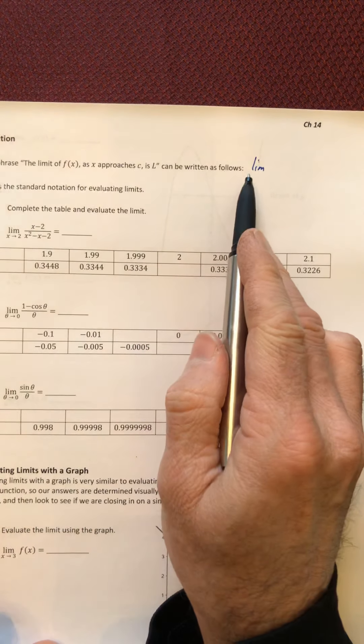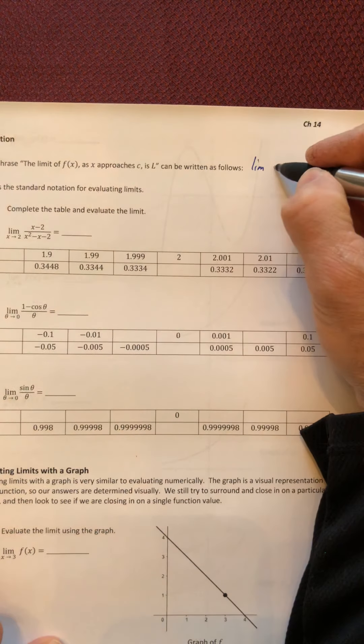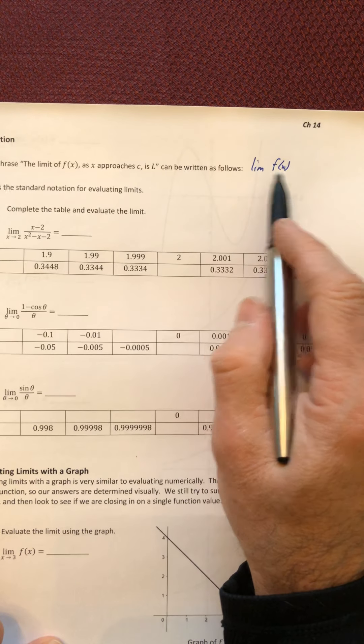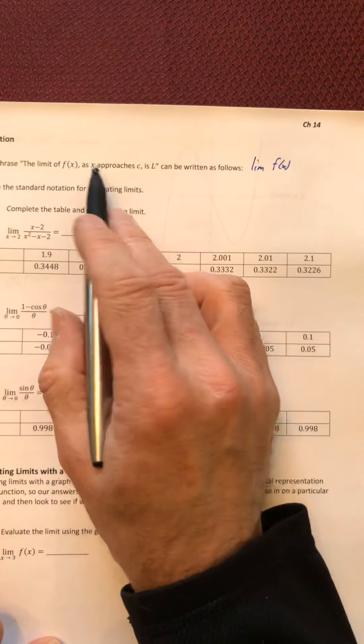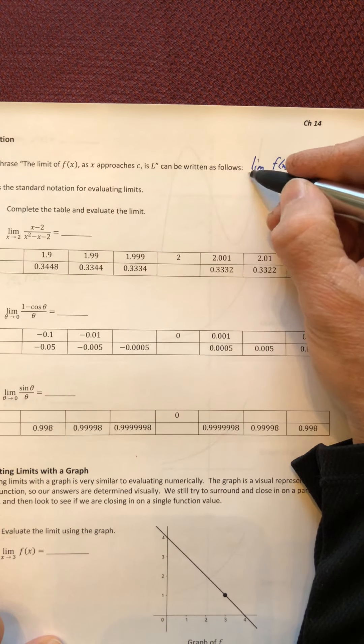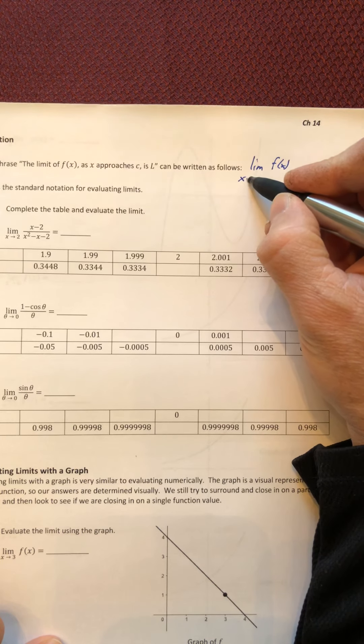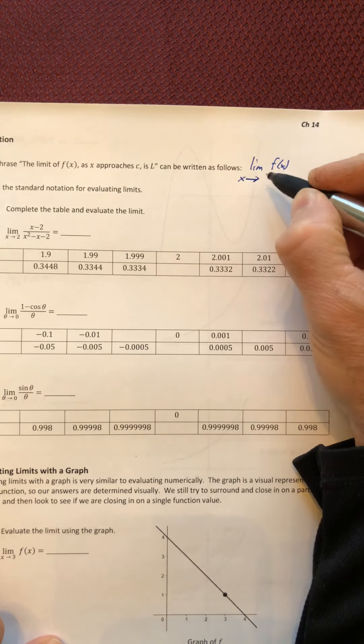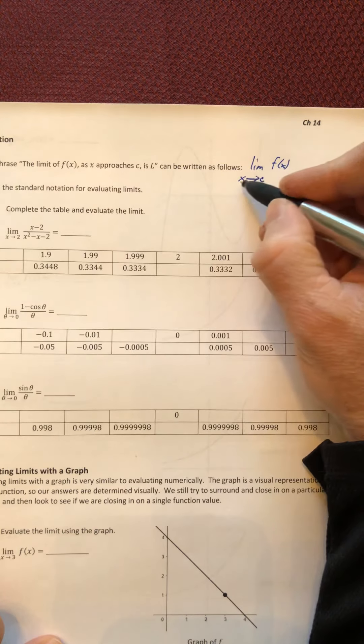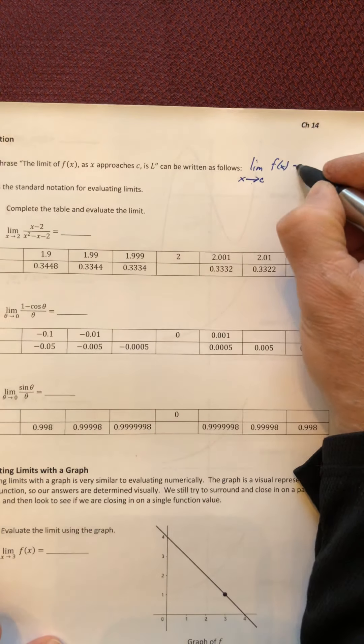The limit is lim of f(X), so there's going to be some function in there and you'll either know what it is or just use function notation. As X approaches C, so down here underneath the lim has X, and then the approaches is an arrow, so X approaches C, so X arrow C.